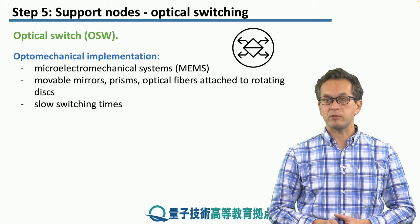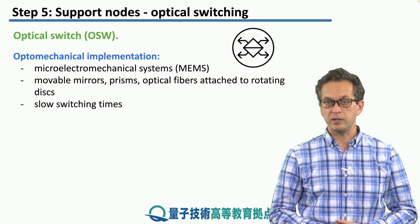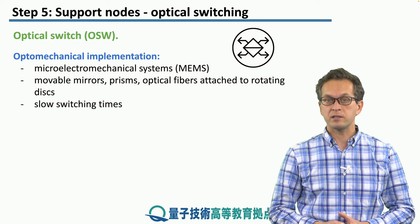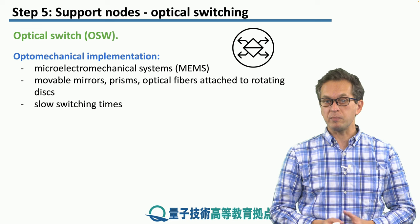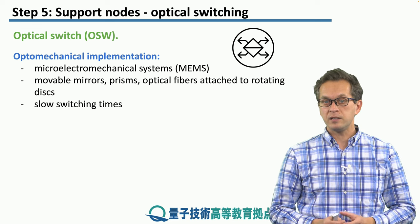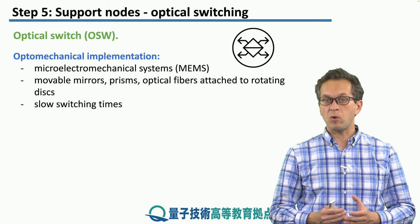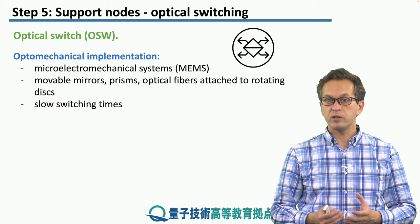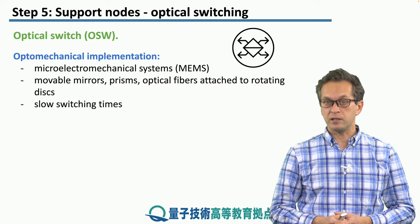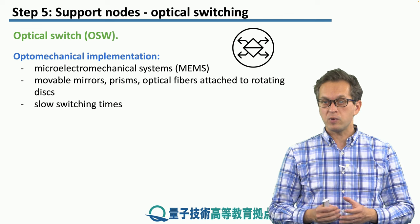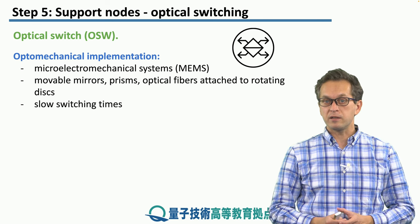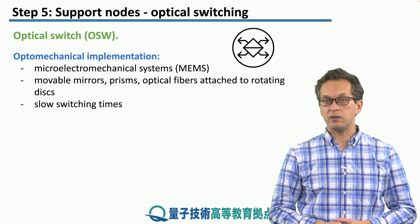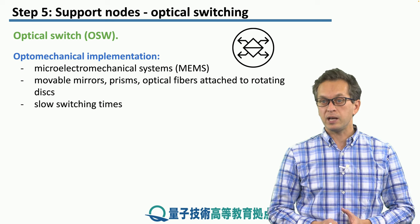Let's look at some of the implementations. The first one is optomechanical implementation, which relies on microelectromechanical systems, or MEMS. This technique involves physical objects that are movable — for example, mirrors, prisms, or even optical fibers attached to a rotating disk. Because we are moving physical objects, the switching times tend to be very long. But on the other hand, crosstalk is quite low.